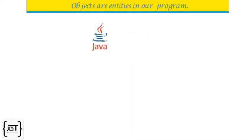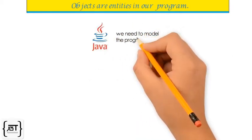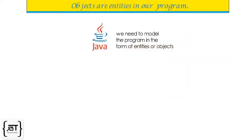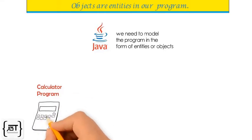When we write a Java program, we need to model the program in the form of entities or objects. For example, when writing a calculator program, a calculator should be an object.